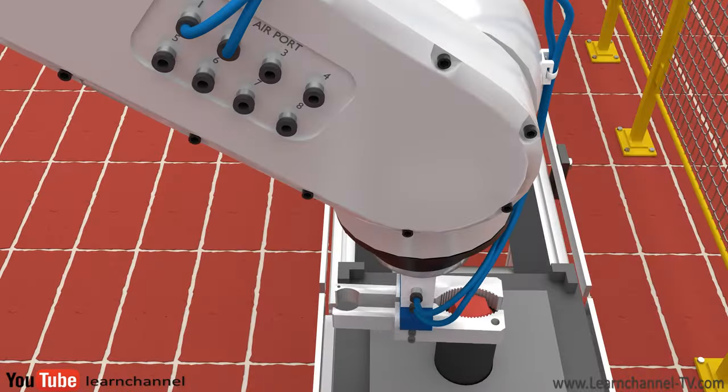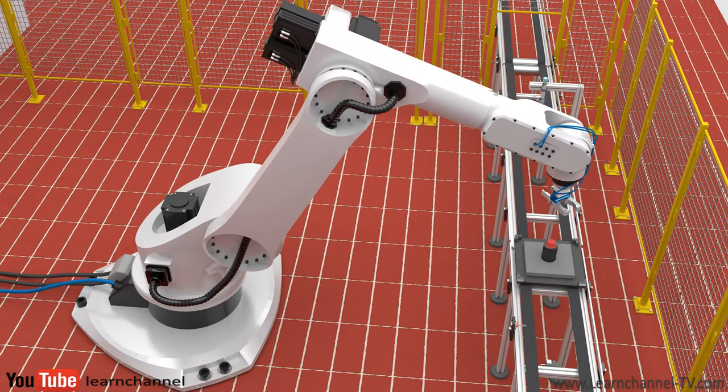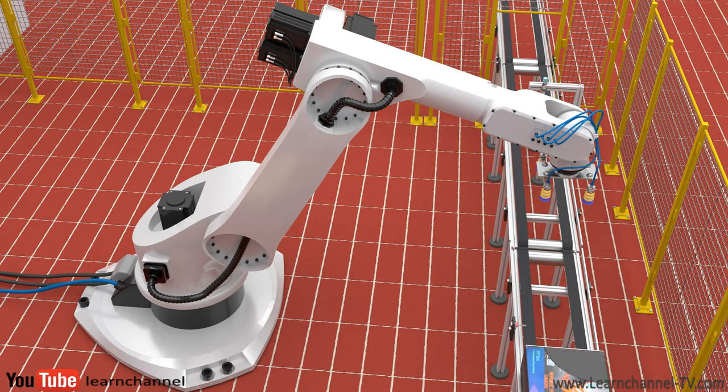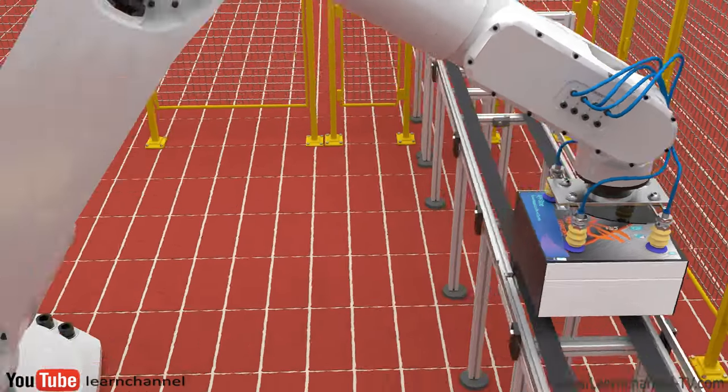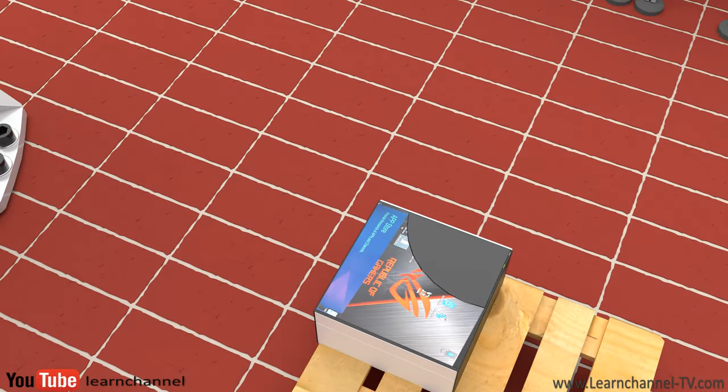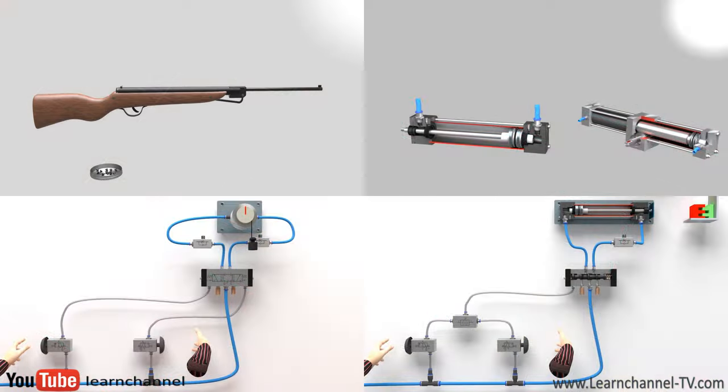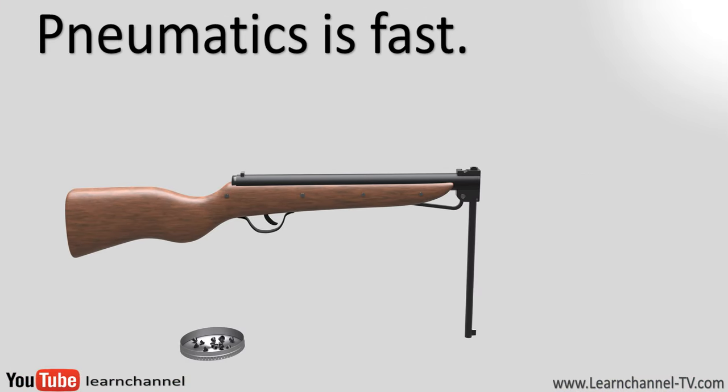Compressed air is fast and short cycle times can be achieved in automated assembly applications. At the same time, it is overload safe. If a system jams, pneumatic actuators will not burn out. Compressed air is also safe. It does not explode in a wide range of operating temperatures. In a hazardous environment where you cannot use electric actuators, pneumatics is a good option.